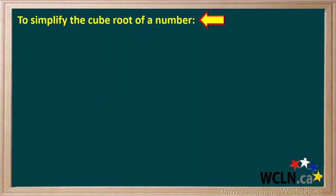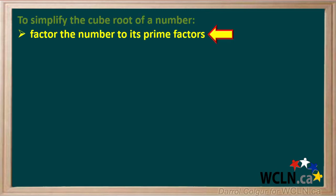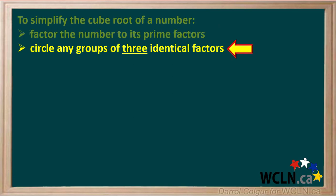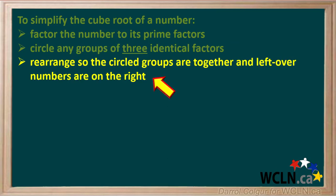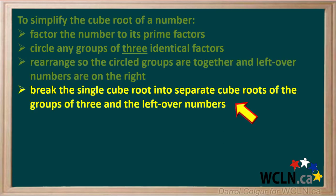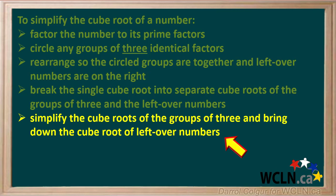Now we'll summarize the steps used to simplify the cube root of a number using prime factors. Start by factoring the number down to its prime factors. Now look for any groups of three identical factors and circle any you find. Then rearrange the numbers so the circled groups are together on the left and any leftover numbers are on the right. Now break the single cube root into separate cube roots — the cube root of each group of three and the cube root of any leftover numbers on the right. Next, simplify the cube root of the groups of three and bring down the cube root of any leftover numbers that can't be simplified.